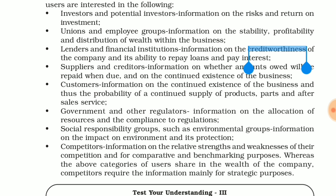Customer information on the continued existence of the business and the probability of a continued supply of products, parts and after-sales service. The customer tries to know whether the company is making a profit or a loss, because if they are dependent on the product and the product supply is closed, it will be difficult for them. So customers also try to know these things.